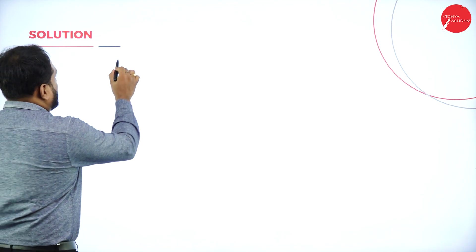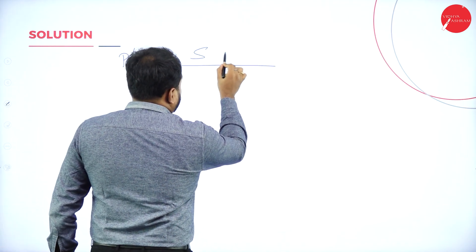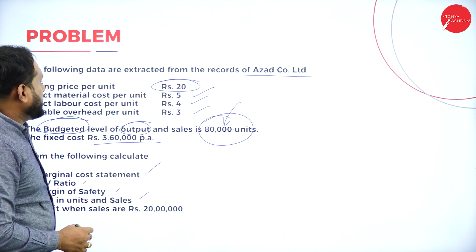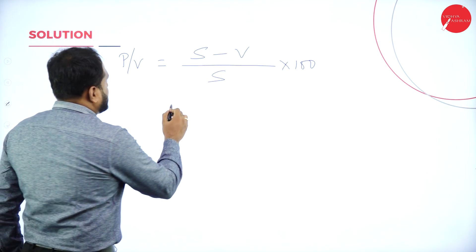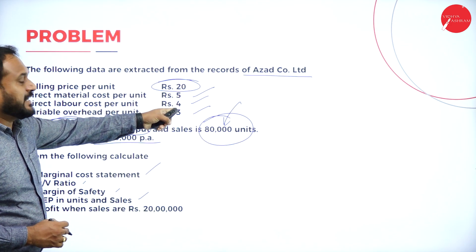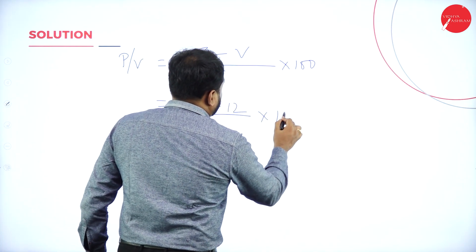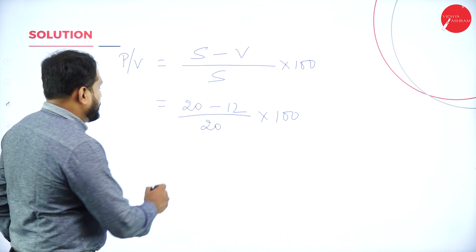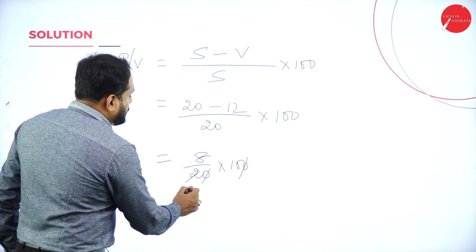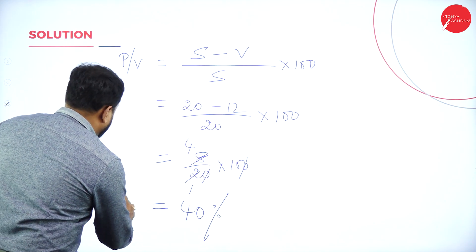Now, PV Ratio: PV = (Selling Price per unit − Variable Cost per unit) / Selling Price per unit × 100. Selling price = ₹20. Variable cost per unit = 5 + 4 + 3 = ₹12. So PV = (20 − 12) / 20 × 100 = 8/20 × 100 = 40%. PV ratio is 40%.